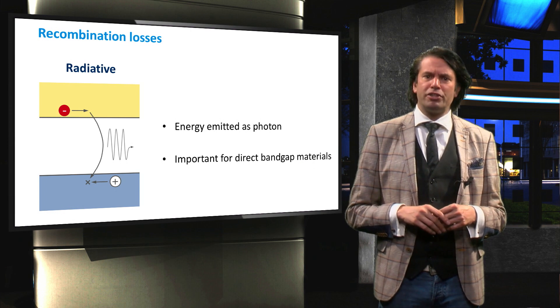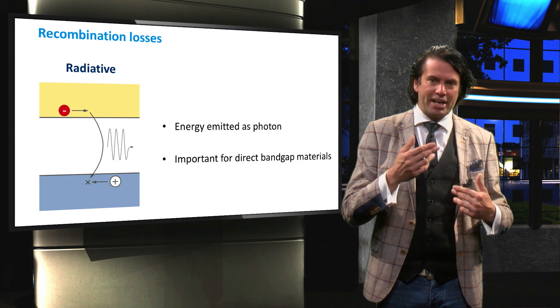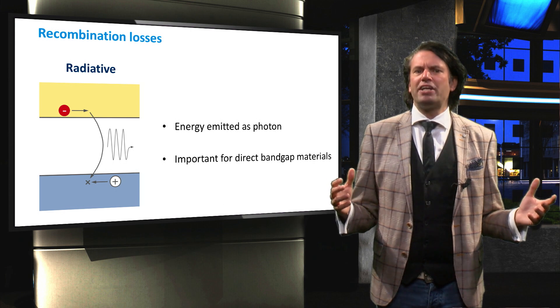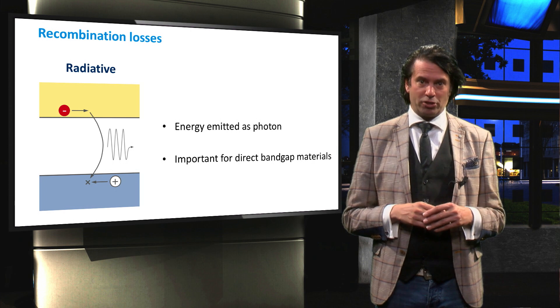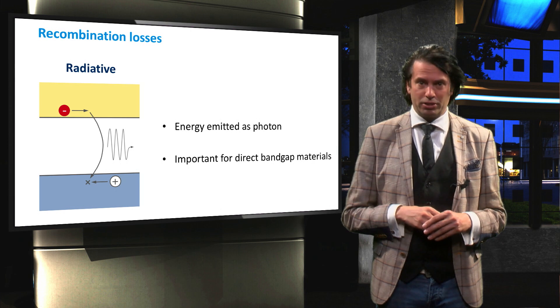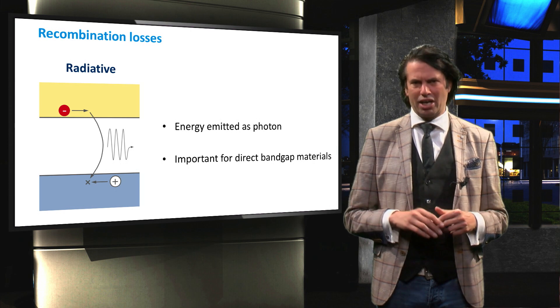The energy of this photon is the same energy as the bandgap of the semiconductor material. Radiative recombination is very significant in direct bandgap semiconductors, but relatively rare in indirect bandgap semiconductors, like crystalline silicon.